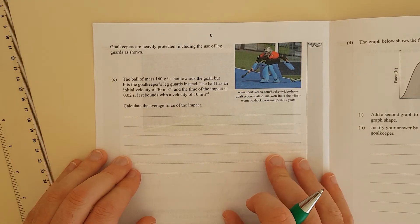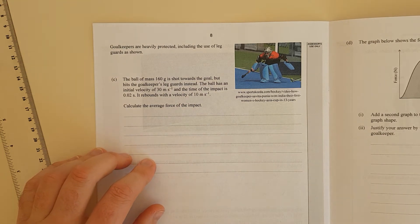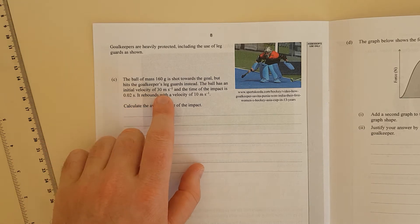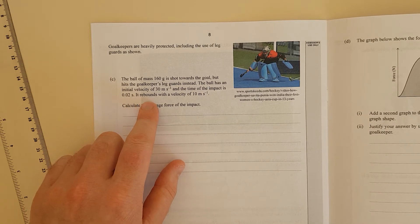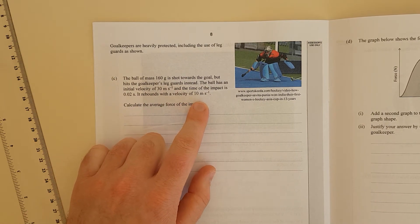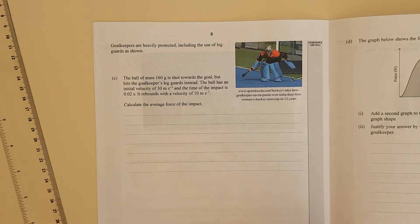Right. We can see this. Goalkeepers are heavily protected, including the use of leg guards as shown. The ball was a mass of 160 grams shot towards the goal, but hits a goalkeeper's leg guards instead. The ball has an initial velocity of 30 meters per second. Ooh, that's pretty quick. That's almost 100 kilometers an hour. And the time of impact is 0.02 seconds, rebounds with a velocity of 10 meters per second. So, calculate the average force of impact.